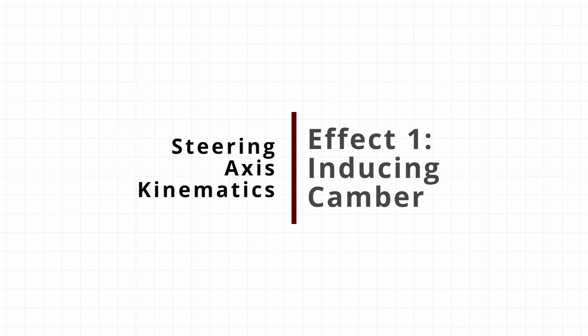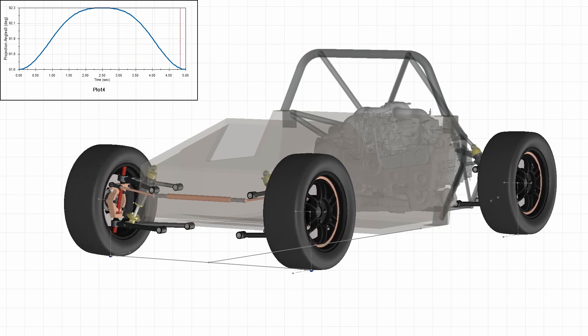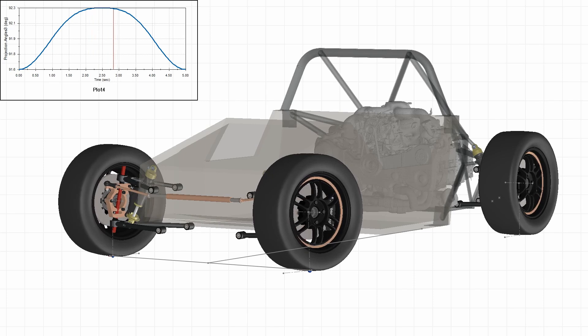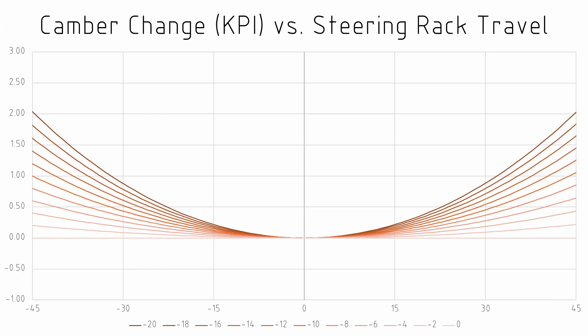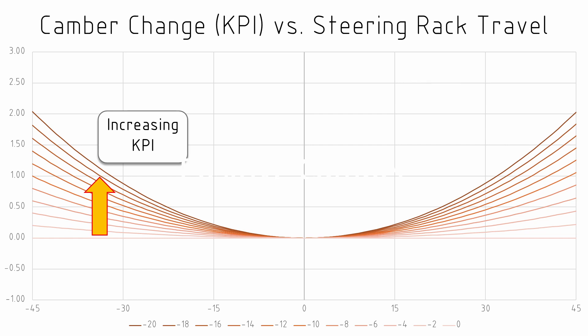The first effect we're considering in this video is the camber change due to steering. The grip and wear of a tyre will be dependent on its camber angle, so if we're inducing a camber change due to rotation around this steering axis it's worth considering. Looking at the effect of KPI, we see in this graph that as we increase the KPI we get an increase in camber change as the steering rack moves. This graph has been created with a zero caster angle so we've isolated the effect of KPI. The camber change due to KPI is non-linear, and regardless of whether the steering rack is moved left or right, steering will induce a positive camber due to KPI.